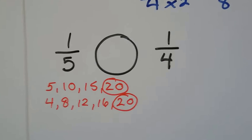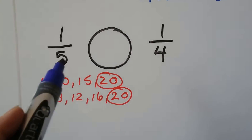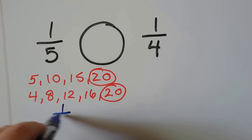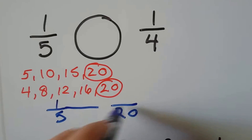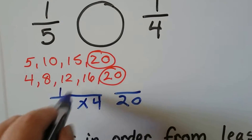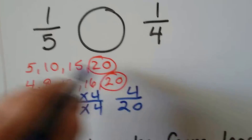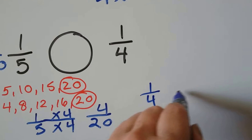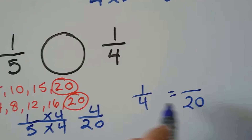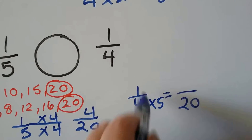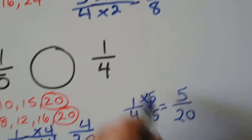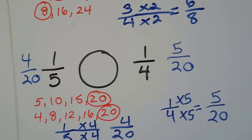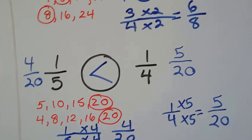Which is bigger: one-fifth or one-fourth? List multiples of five and four — they can meet at 20. One-fifth with a denominator of 20: five times four is 20, so the numerator gets multiplied by four — giving four-twentieths. One-fourth with a denominator of 20: four times five is 20, so the numerator gets multiplied by five — giving five-twentieths. Five-twentieths is bigger because the numerator is bigger and they have the same denominator.